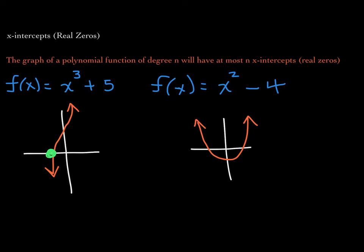For this quadratic function — a polynomial function with leading coefficient positive 1, constant term negative 4, and even degree 2 — this function will have, at most, 2 real zeros or 2 x-intercepts. Inspecting the graph, it does indeed have 2 distinct real zeros, or 2 x-intercepts.